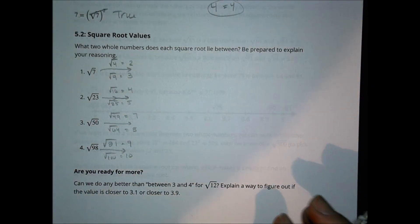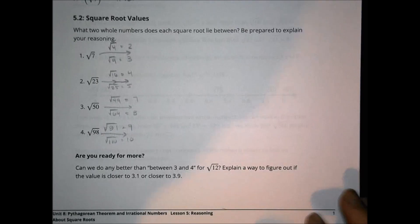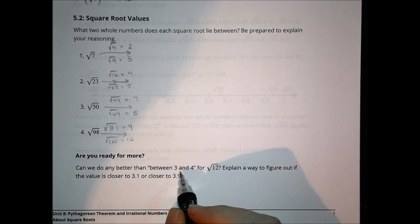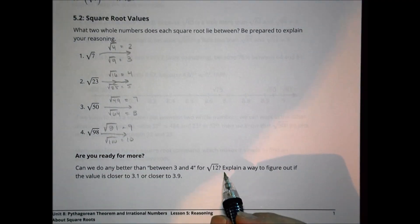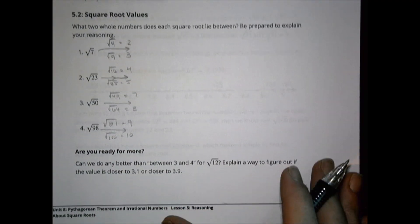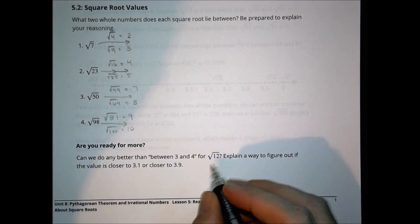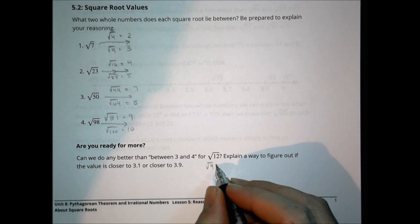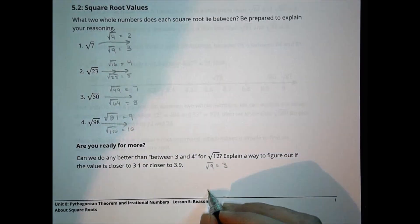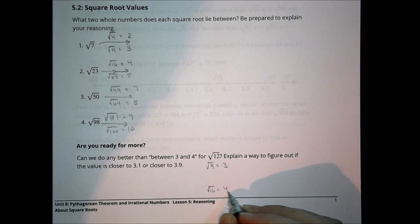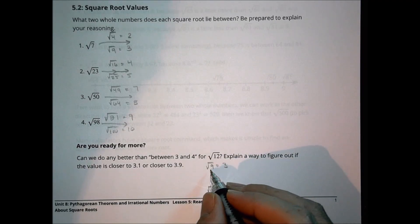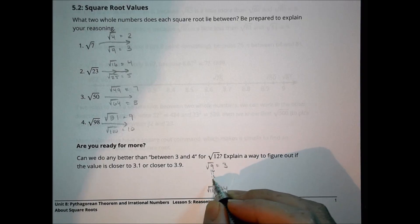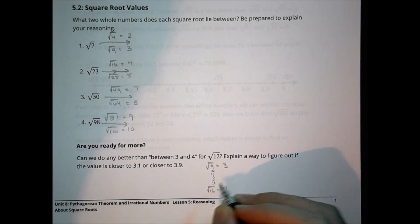Can we do better than that? The question is: can we do better than between 3 and 4 for the square root of 12, and can we figure out if the value is closer to 3.1 or 3.9? The square root of 9 is 3 and the square root of 16 is 4, so we're talking about the square root of 12 — plotting somewhere between 9, 10, 11, 12, 13, 14, 15.